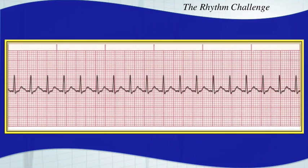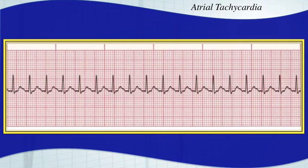This is an atrial tachycardia. You do have P waves — they're hidden in that T wave that looks like it has a little bit of a bump. T waves never have bumps like that; it's always caused by something like a P wave hidden in there.